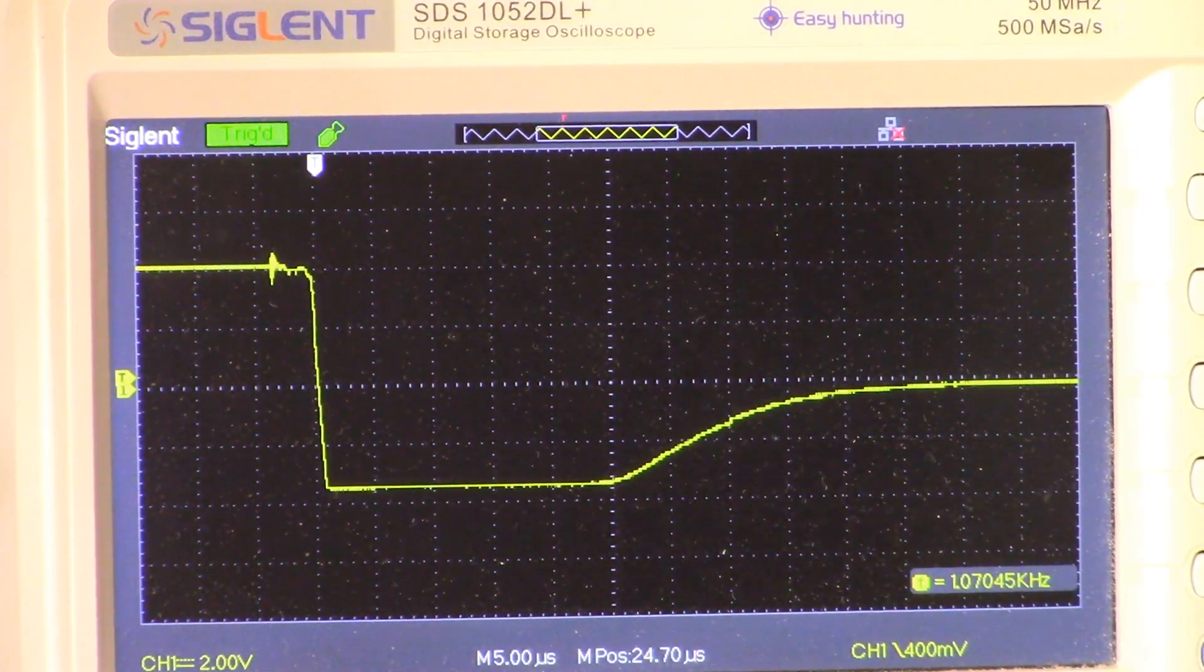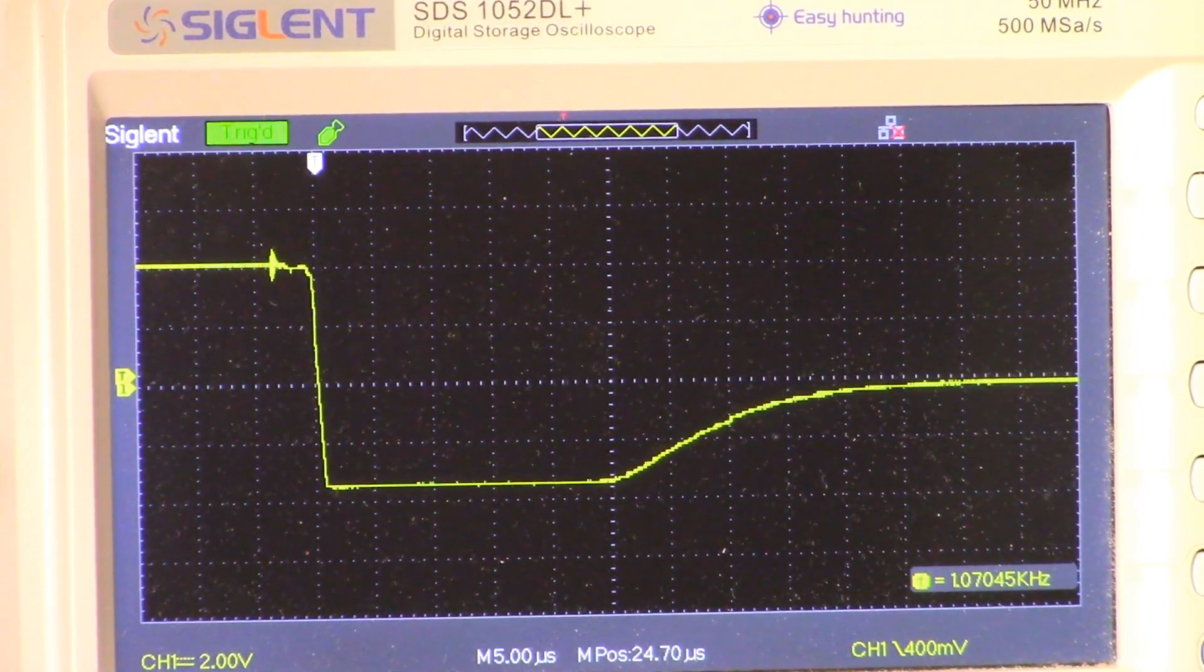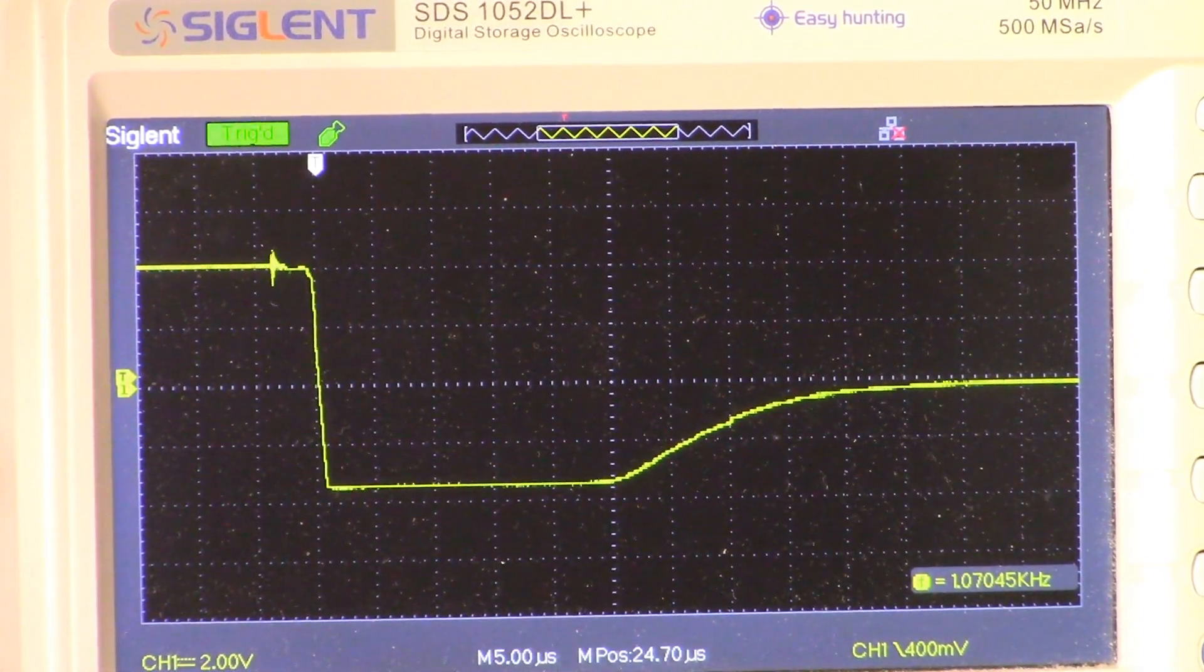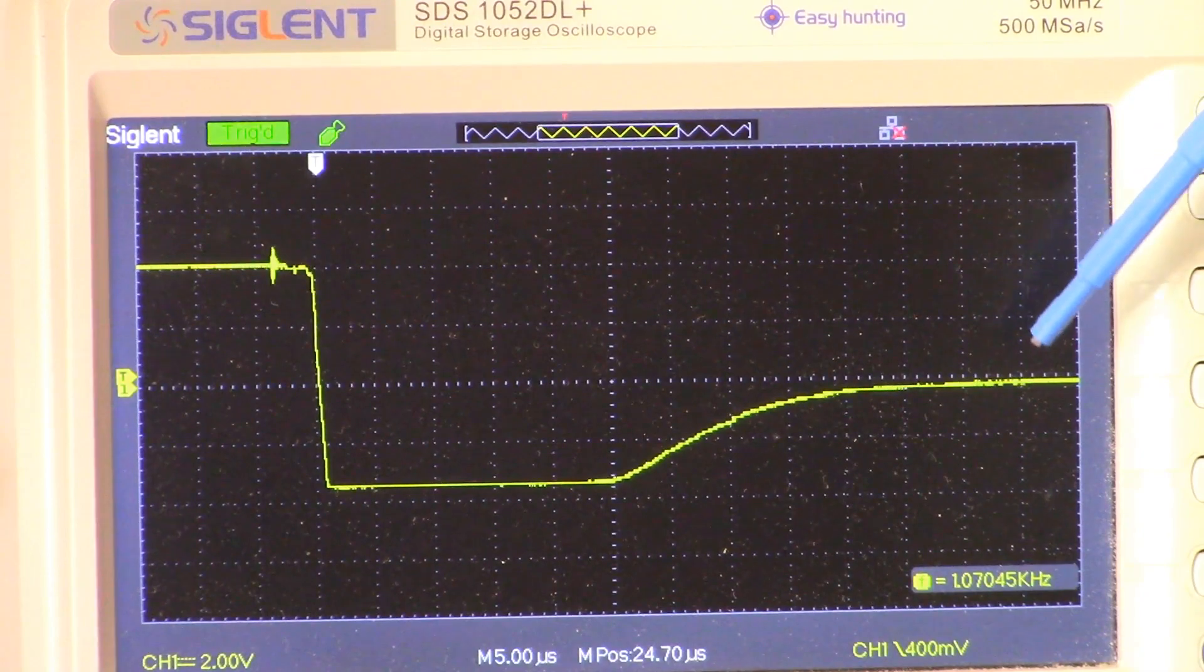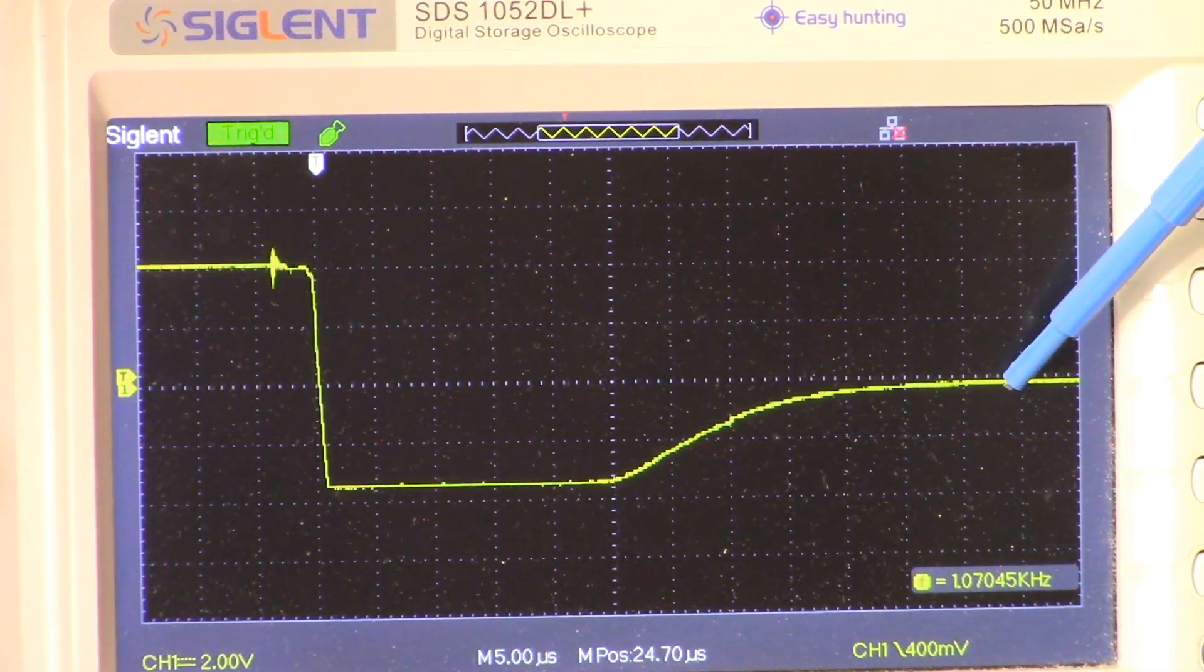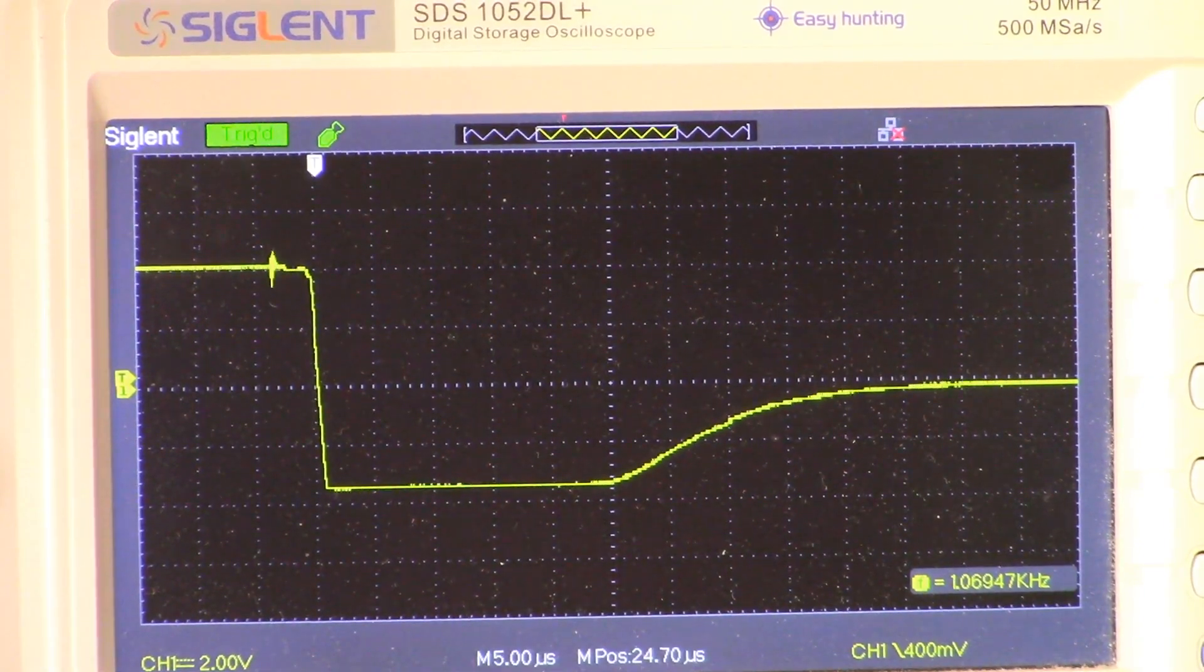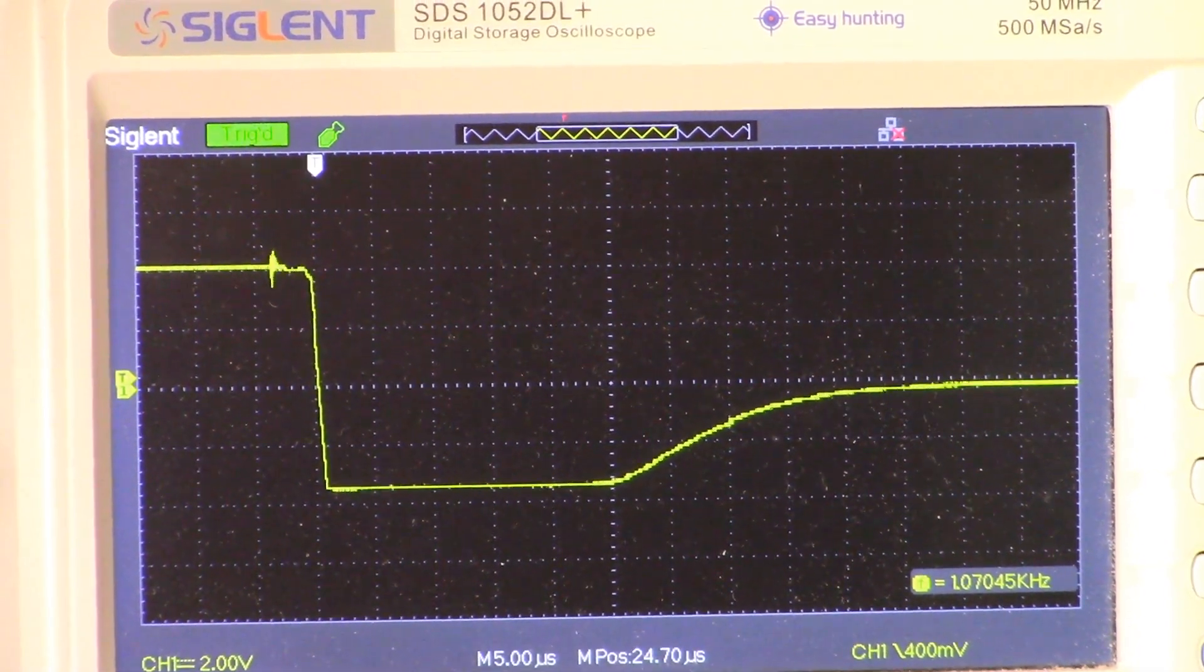If we adjust RV1, we will get closer to the zero point here. I've already adjusted that, so I don't think I'm going to do it again.